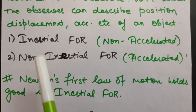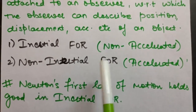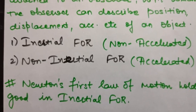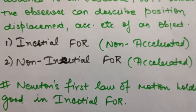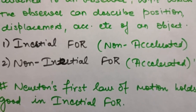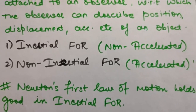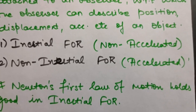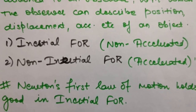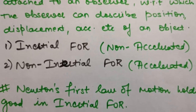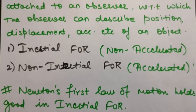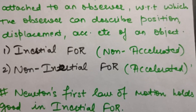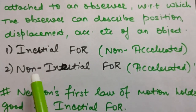We have two types of frames of reference: inertial and non-inertial. An inertial frame of reference is a non-accelerated frame. For example, a frame of reference attached to a person in a bus at rest — since the bus is not accelerating, that frame is inertial. A non-inertial frame of reference is an accelerated frame. For example, a frame attached to a person in a bus moving with variable velocity — that means it is accelerating. So that frame of reference becomes a non-inertial frame of reference.